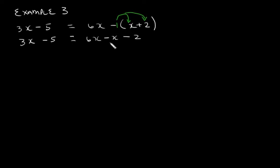So negative 1 times x is negative x and negative 1 times positive 2 is negative 2. What do we need to do now? We need to simplify.